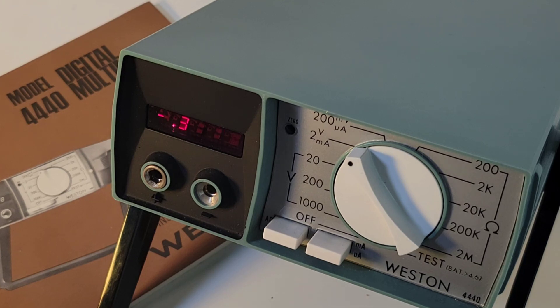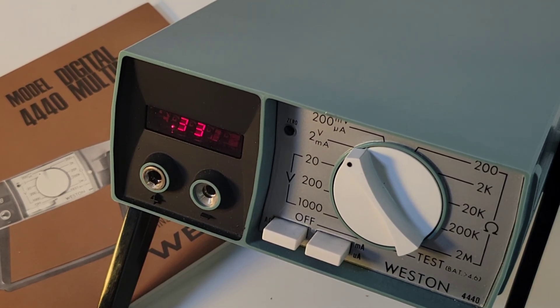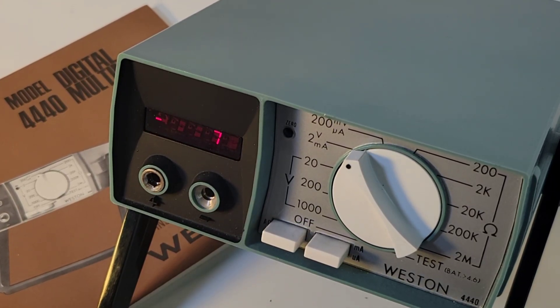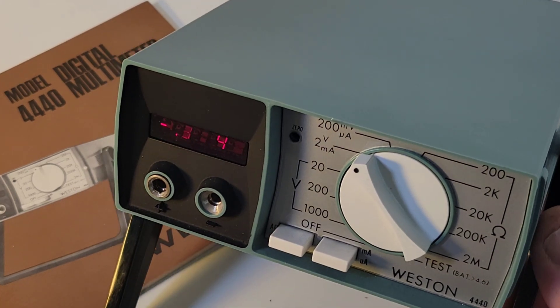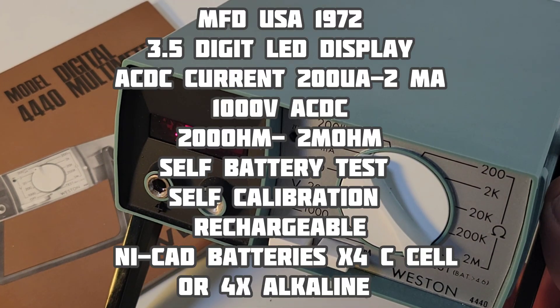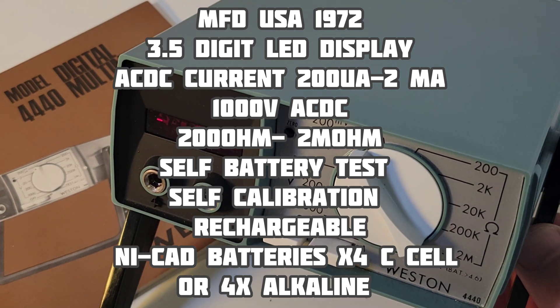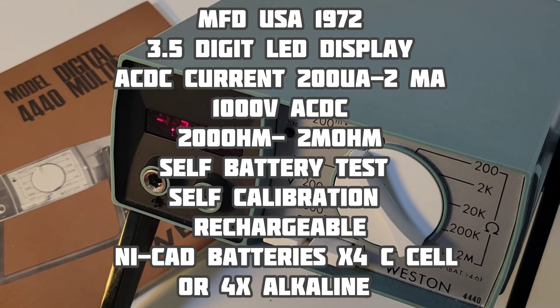This is one of my favorite oldies in my collection. The Weston 4440, a 1972 model, beautifully made. Just look at it. Gorgeous with that so gorgeous vintage blue. Three and a half digits. A very small original style light emitting diode display.